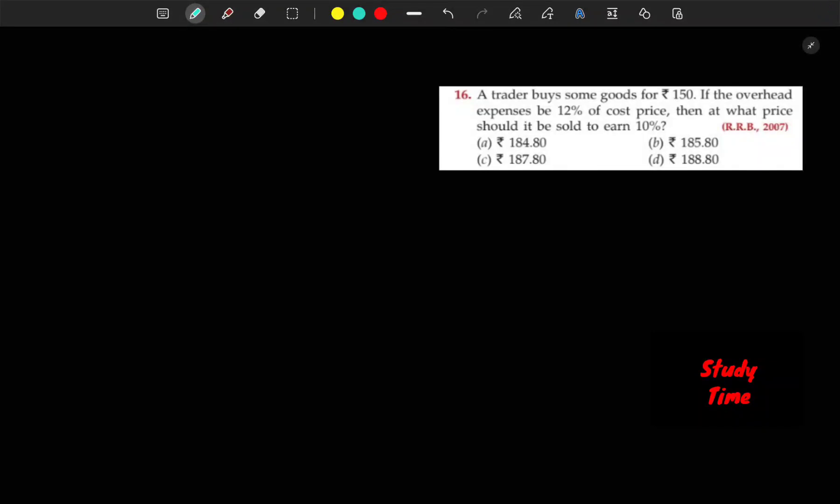Hello everyone, welcome back to my channel. Question number 16: A trader buys some goods for 150. Overhead expenses are 12% of cost price. Then at what price should it be sold to earn 10% profit? RRB 2007.